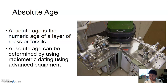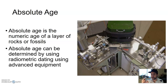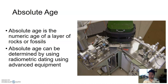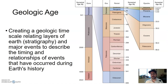Sometimes we don't necessarily have to deal with absolute age to figure out geology. We don't always need a precise number. It helps, but not always. So we have absolute age — that's one way to date a rock.